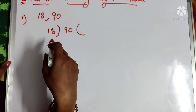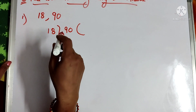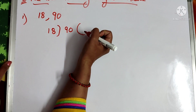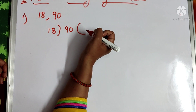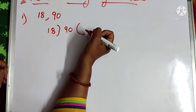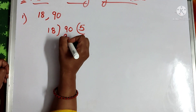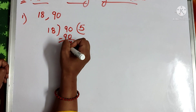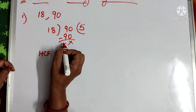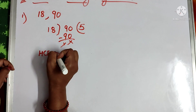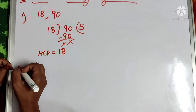18 ones are 18, 18 twos are 36, 18 threes are 54, 18 fours are 72, and 18 fives are 90 directly. Since we get the remainder 0 in the first step itself, the last divisor is the HCF, which is 18.